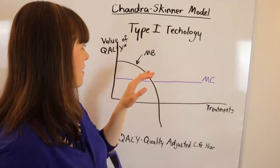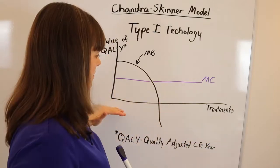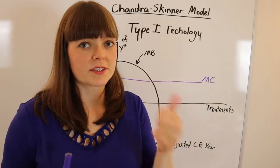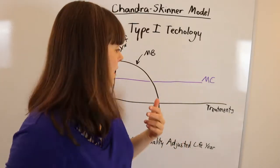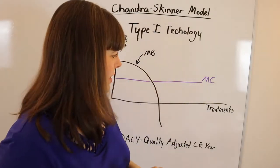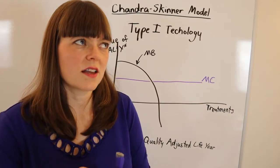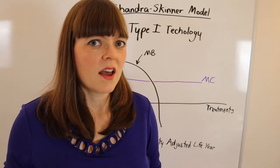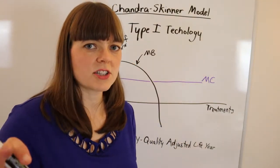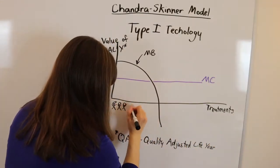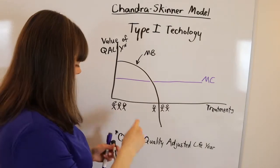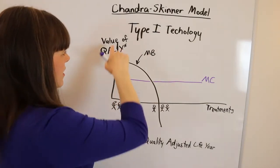Here we have type one technologies graphed. The x-axis represents treatments — a procedure, a drug, anything that's a medical technology applied to a patient. The way to think about the x-axis is that you imagine everybody who might need that technology, and you line them up in order of how important that technology is to their health. The y-axis is the value of quality adjusted life years — how much does the technology extend your life, adjusted for quality of life during those extra years.